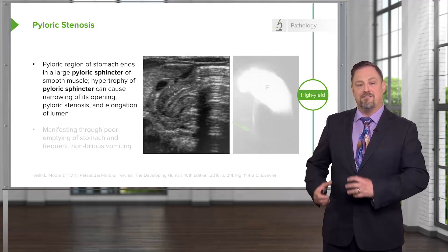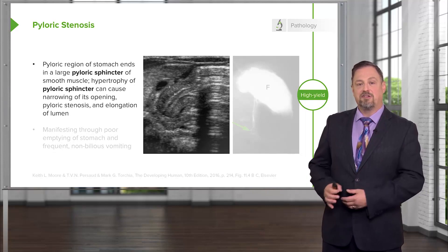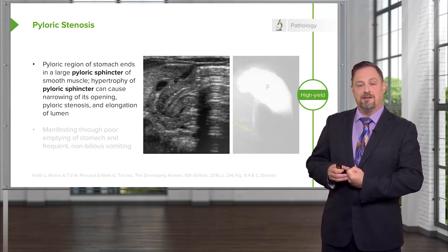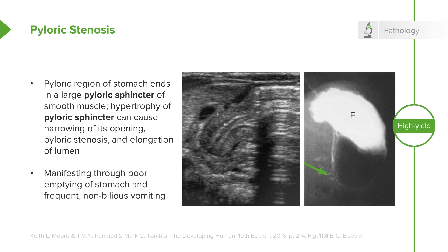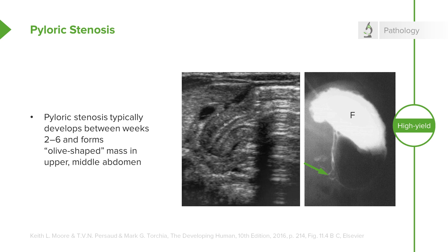The pyloric region has a very thick smooth muscle sphincter within it, and the pyloric sphincter is what normally allows food to stay in the stomach until it's very gradually released as that sphincter relaxes. Hypertrophy of the pyloric sphincter makes stomach emptying very difficult. We can see on ultrasound an extended pyloric sphincter with a very narrow lumen, and on barium swallow study the fundus of the stomach is full of barium but only a very thin trickle passes through that stenotic pyloric canal. This typically develops between weeks two and six and is often described as a hard olive-shaped mass in the upper middle portion of the abdomen, preliminarily diagnosed with palpation and confirmed with ultrasound or barium swallow study.